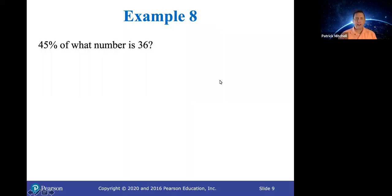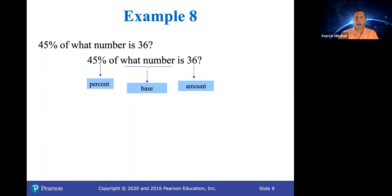Next example. 45% of what number is 36. So let's translate that into a proportion. 45 is the percent. What number is the base. It comes after the word of, which makes 36 the amount. So amount over base equals percent over 100 looks like this. And again, they're going to simplify 45 over 100, which you really don't have to do at this point.